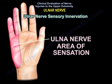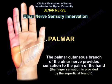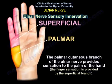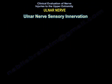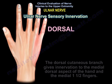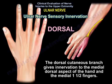This is the ulnar nerve area of sensation. The palmar cutaneous branch of the ulnar nerve provides sensation to the palm of the hand. The superficial branch provides sensation to the fingers. The dorsal cutaneous branch gives innervation to the medial dorsal aspect of the hand and to the medial one and a half fingers.